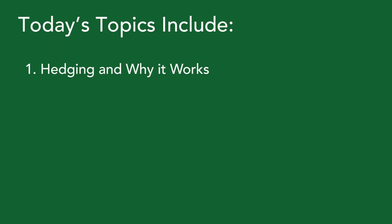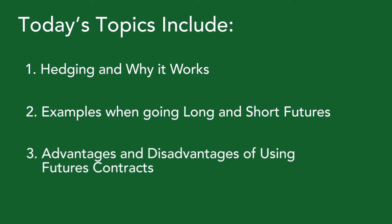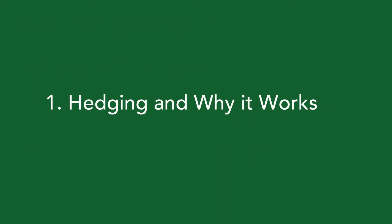Our first topic today is hedging and why it works. We're going to look at some examples by going long (buy) or short (sell). If you're a cash crop producer, you're wearing a short sell futures hat. If you're a livestock producer, you'd be wearing a long buy hat, as you're concerned about higher feed prices. And lastly, we're going to look at advantages and disadvantages when using futures contracts to hedge.